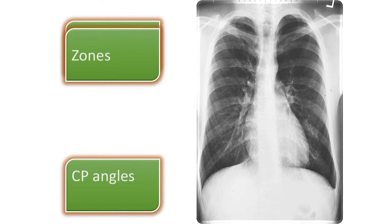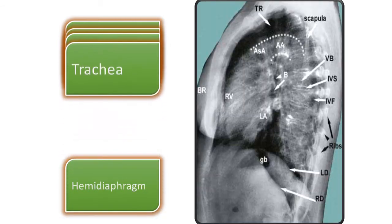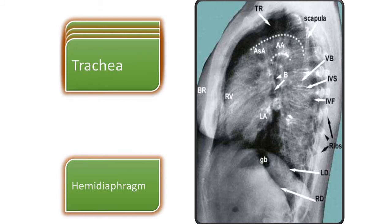There are CP angles — cardiophrenic and costophrenic angles. There may be some effusion on the left side where the angle is not acute. The tracheal shadow is very important: in cases of any apical lung mass or thyroid mass, the trachea may be shifted. In the lateral view we can also see the hemidiaphragms.